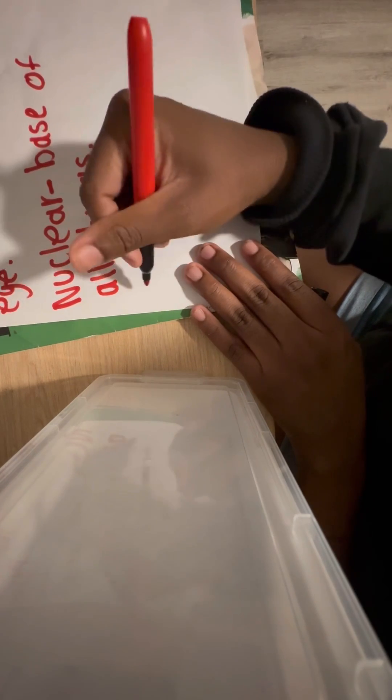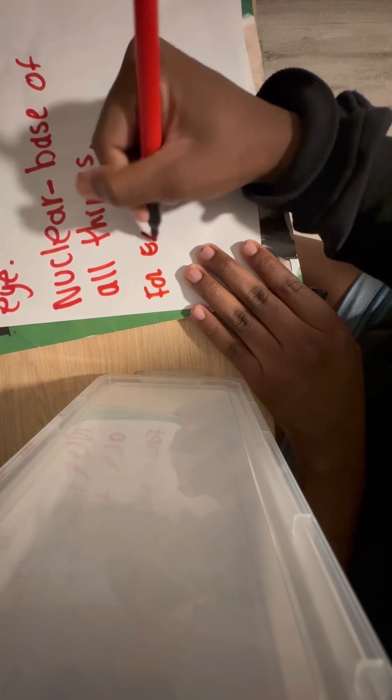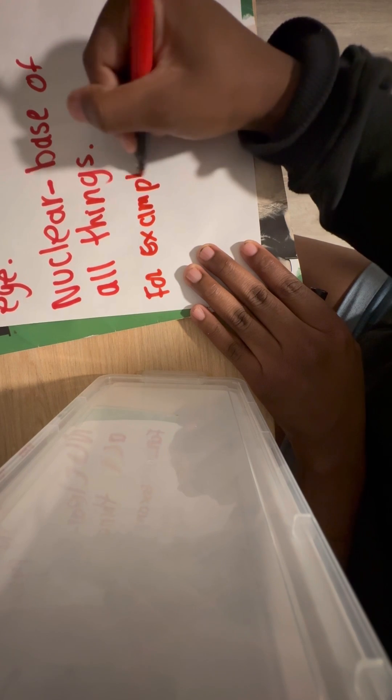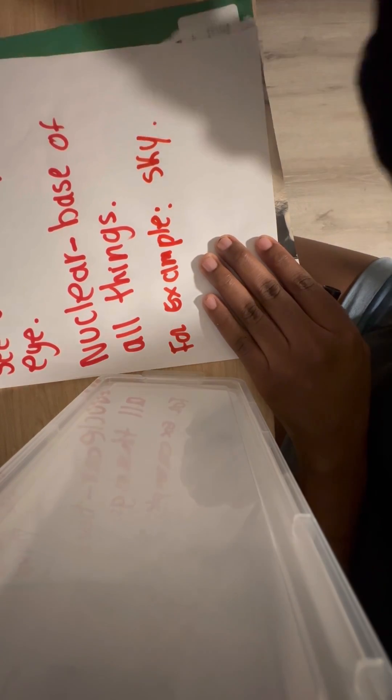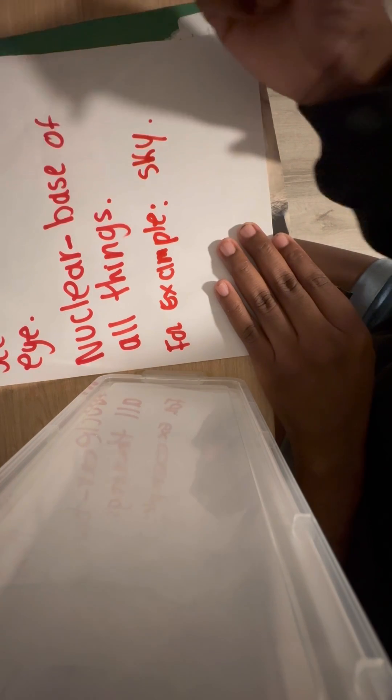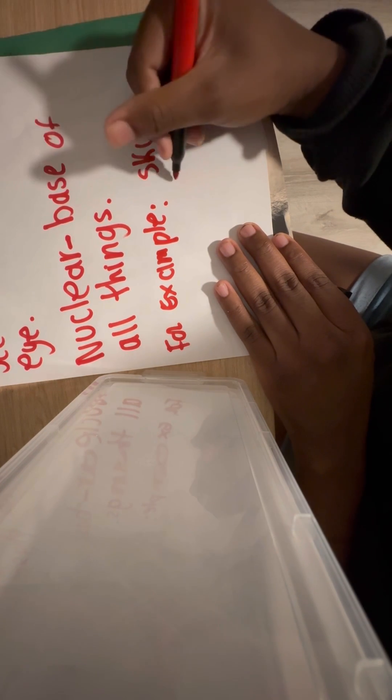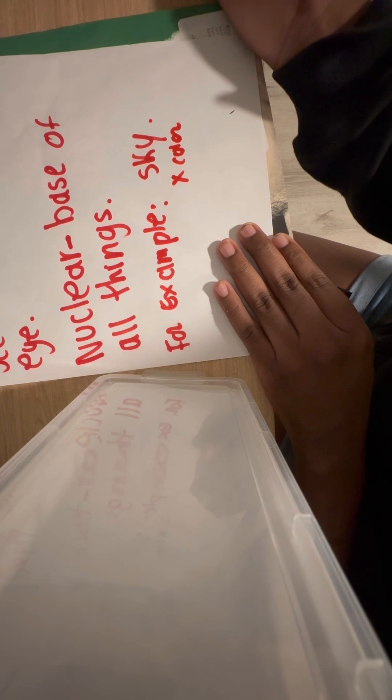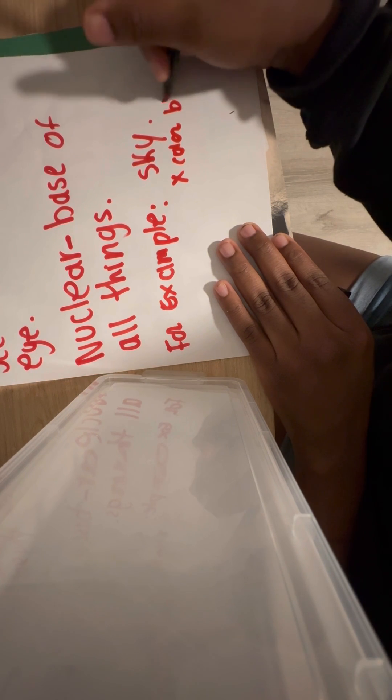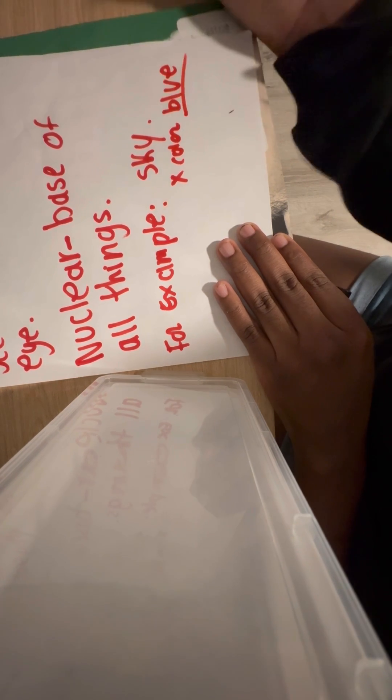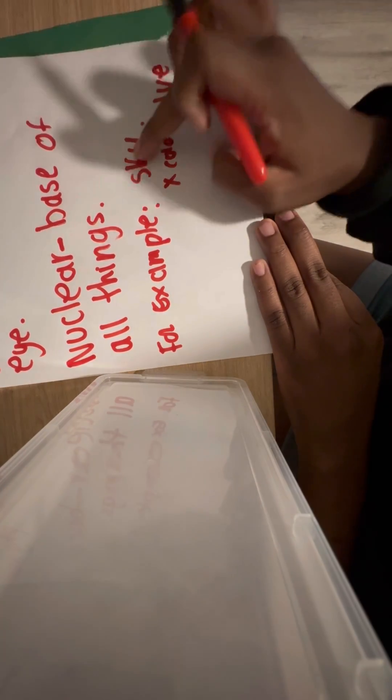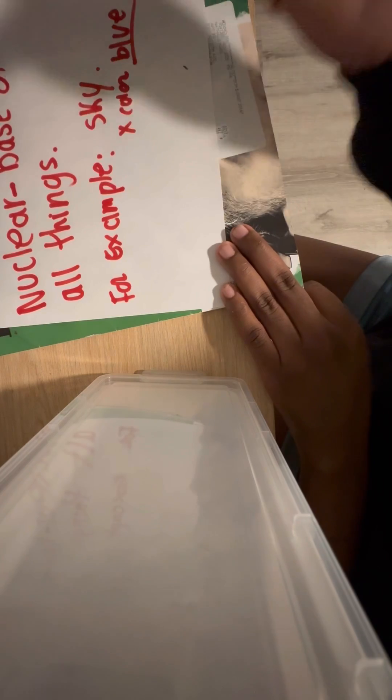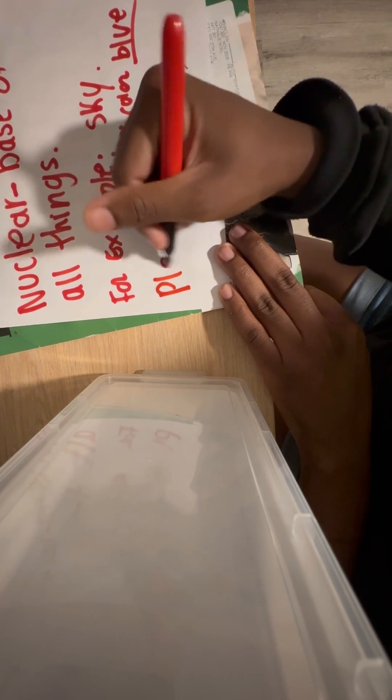For example, the sky. Now if the sky didn't have any color, you wouldn't see that it's there. The blue color - now when the blue color is added to the sky, it's something called plasma.